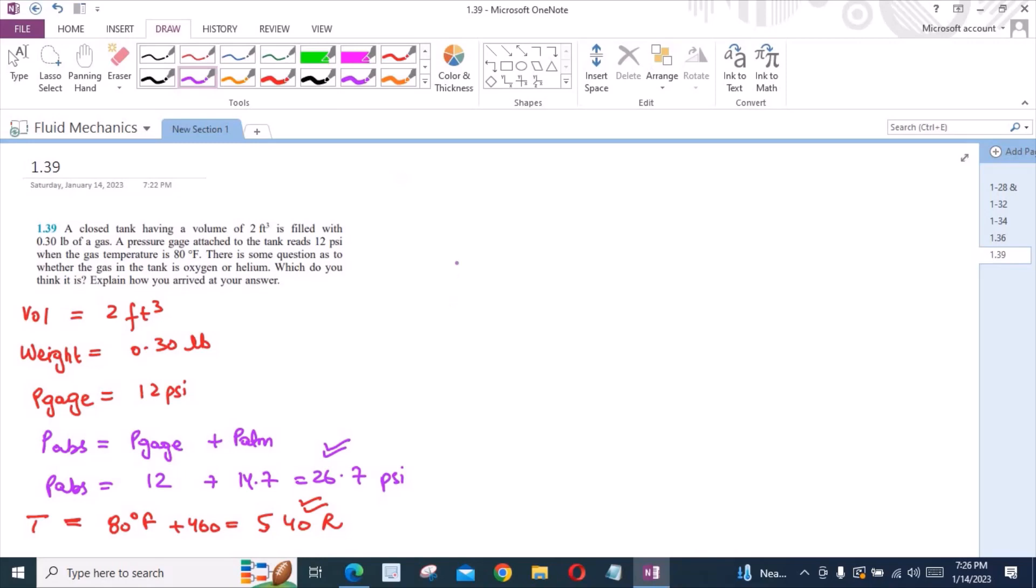Now we would find the density of the unknown gas by using the basic formula which is density of unknown gas is equal to mass upon volume. And mass could be written as weight over acceleration due to gravity divided by volume. And density could be written as weight over acceleration due to gravity times volume.